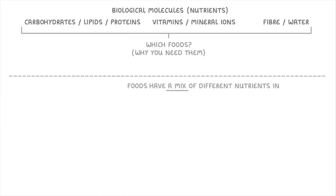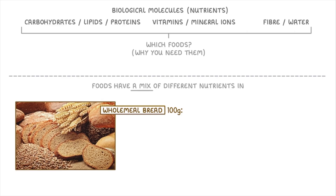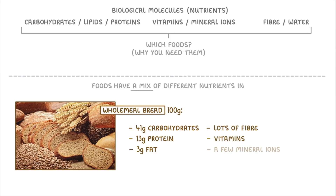Just before we start, I want to point out that foods normally have a mix of different nutrients in them, not just one. For example, 100 grams of wholemeal bread, which contains about 250 calories — so one eighth of your daily energy requirements — contains about 41 grams of carbohydrates, 13 grams of protein and 3 grams of fat, as well as lots of fiber, a couple of vitamins and a few mineral ions. So even though in this video we'll say which foods are a good source of each nutrient, remember that there's a lot of overlap and almost all foods contain a mix.